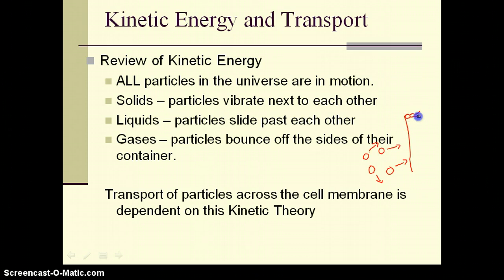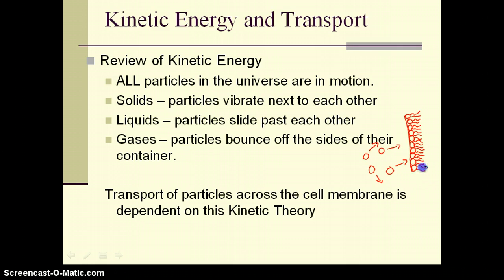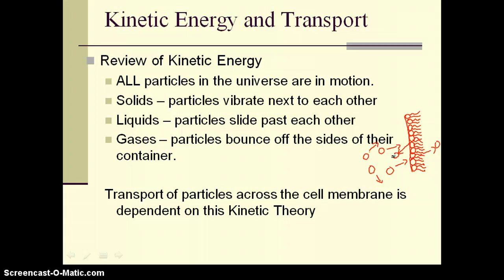We have this cell membrane that's made up of fats — a fat layer. Particles that are in motion will move through this layer if they are small enough, or if they can be dissolved by the fat layer — meaning they're nonpolar. Some things will go right through and some will bounce off, depending on their size, shape, and whether they're polar or nonpolar. We'll be getting into this with passive transport and active transport in the next couple days of notes.